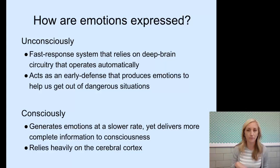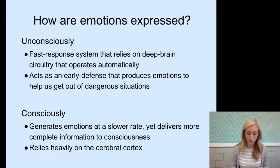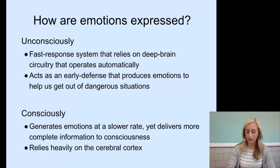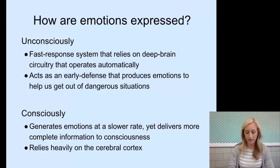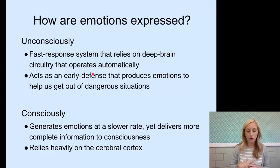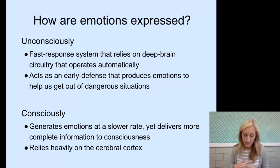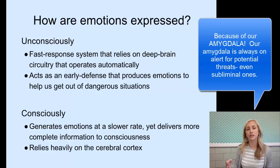Unconsciously, we have a fast response system that relies on deep brain circuitry that operates automatically, linked to implicit memories as it states in your notes. And I want you to jot down a reminder about implicit memories as we talked about in Unit 7. It acts as an early defense that produces emotions to help us get out of dangerous situations, and we are very receptive to possible threats, therefore they're easier to detect because of the biology going on there.